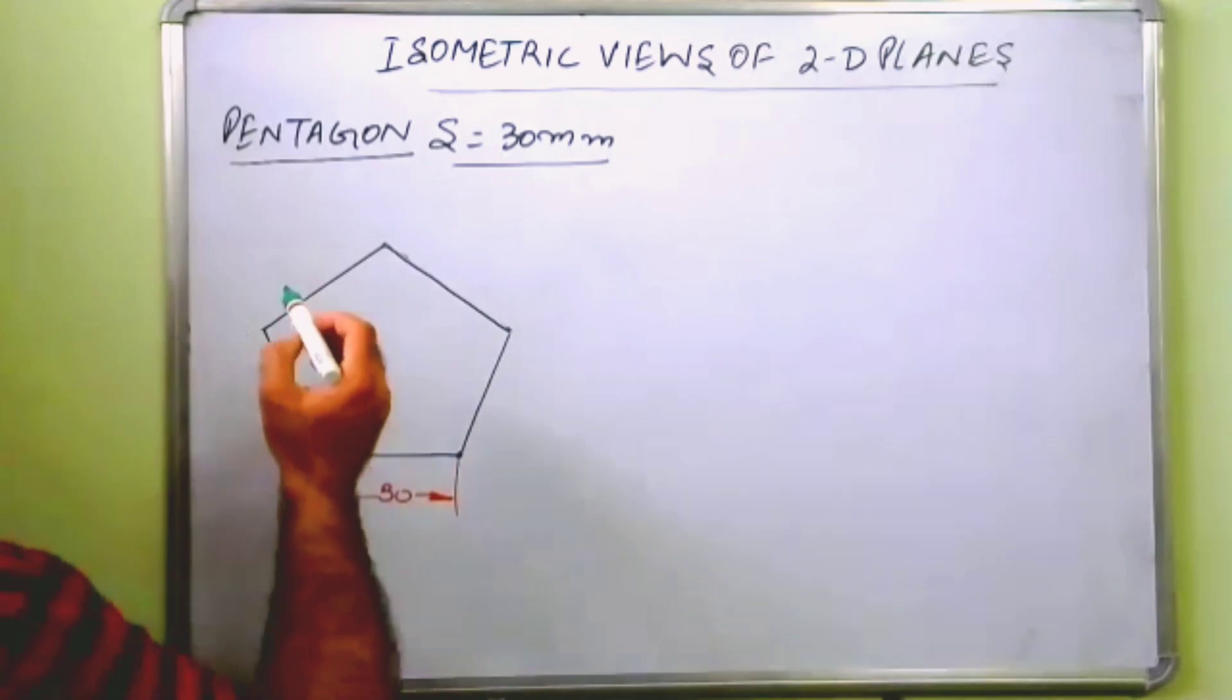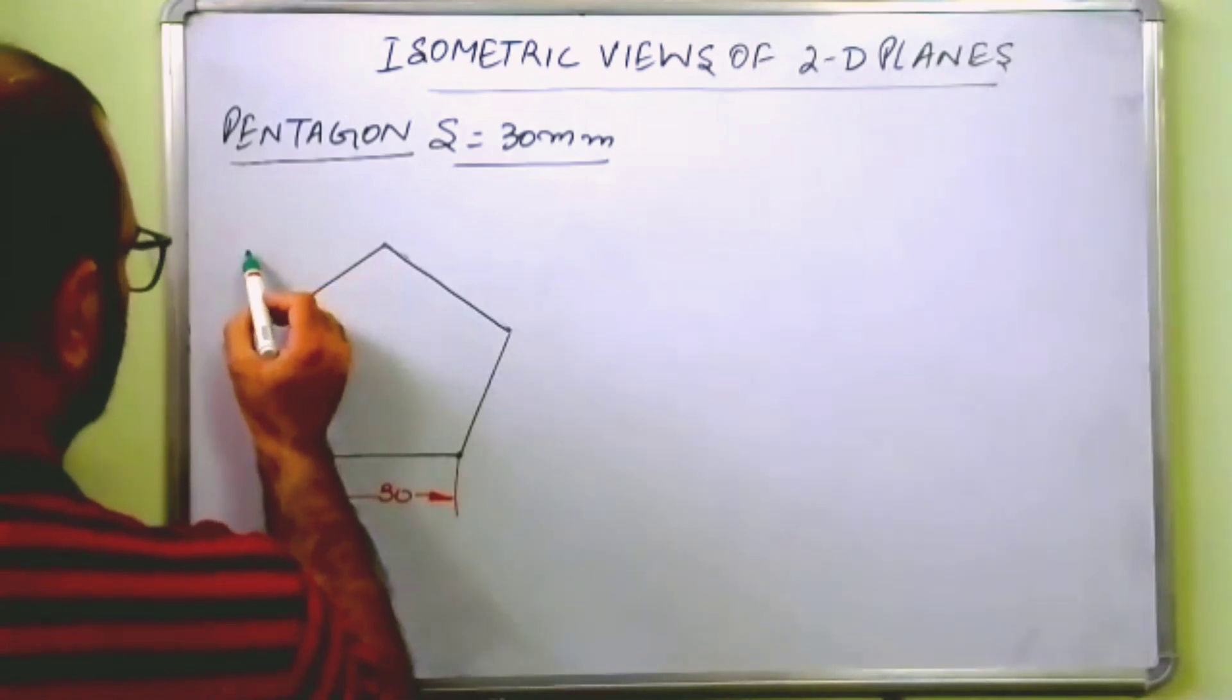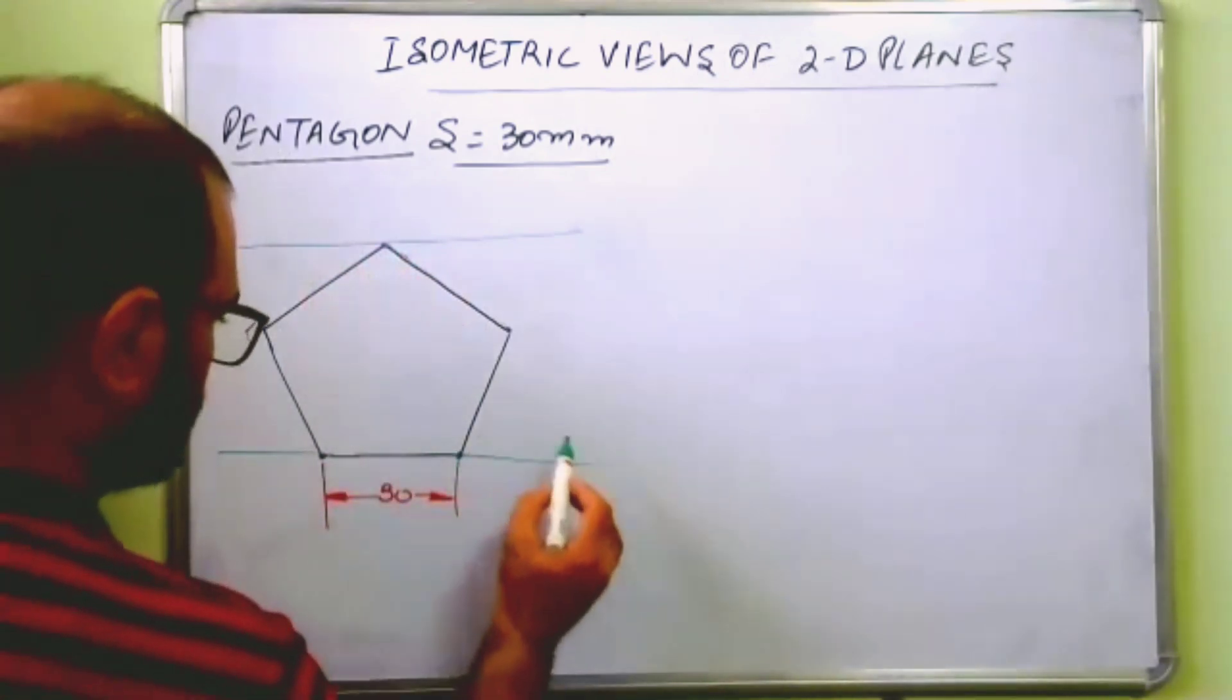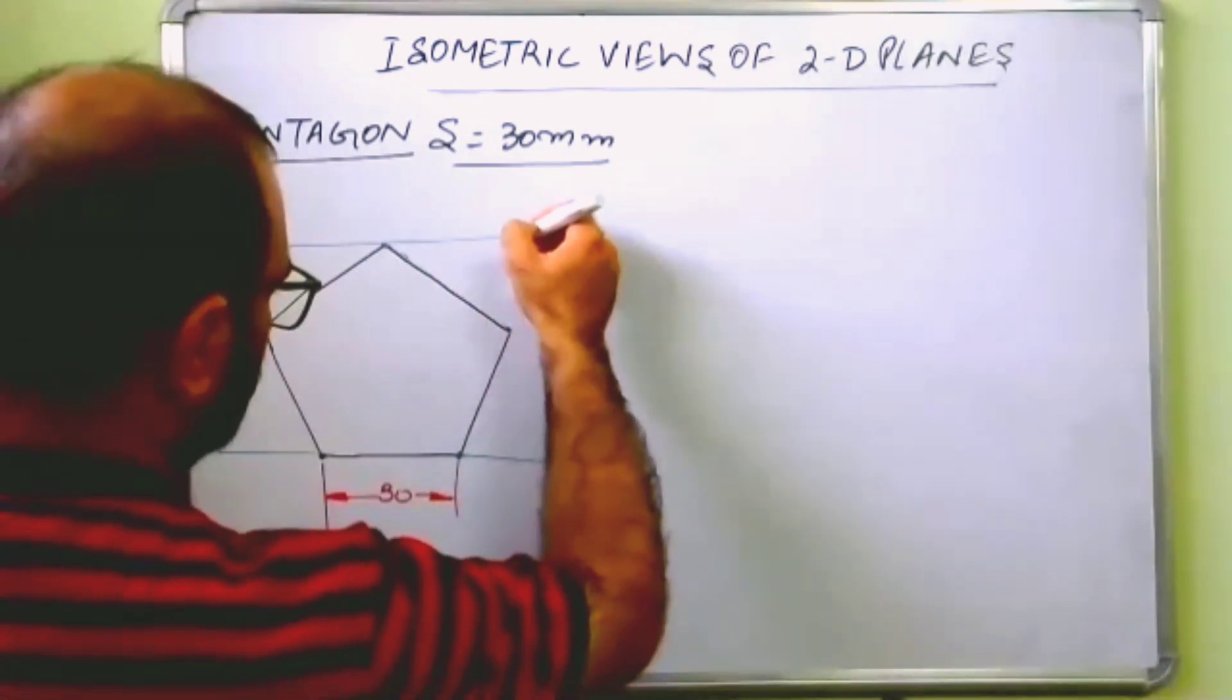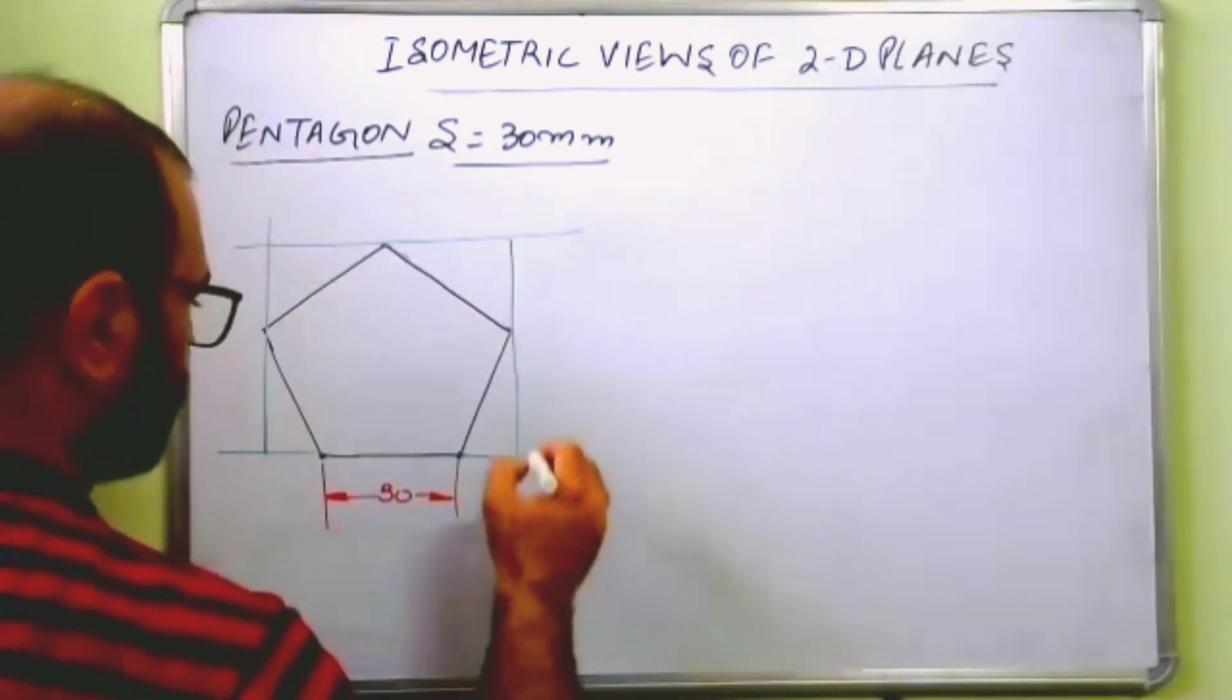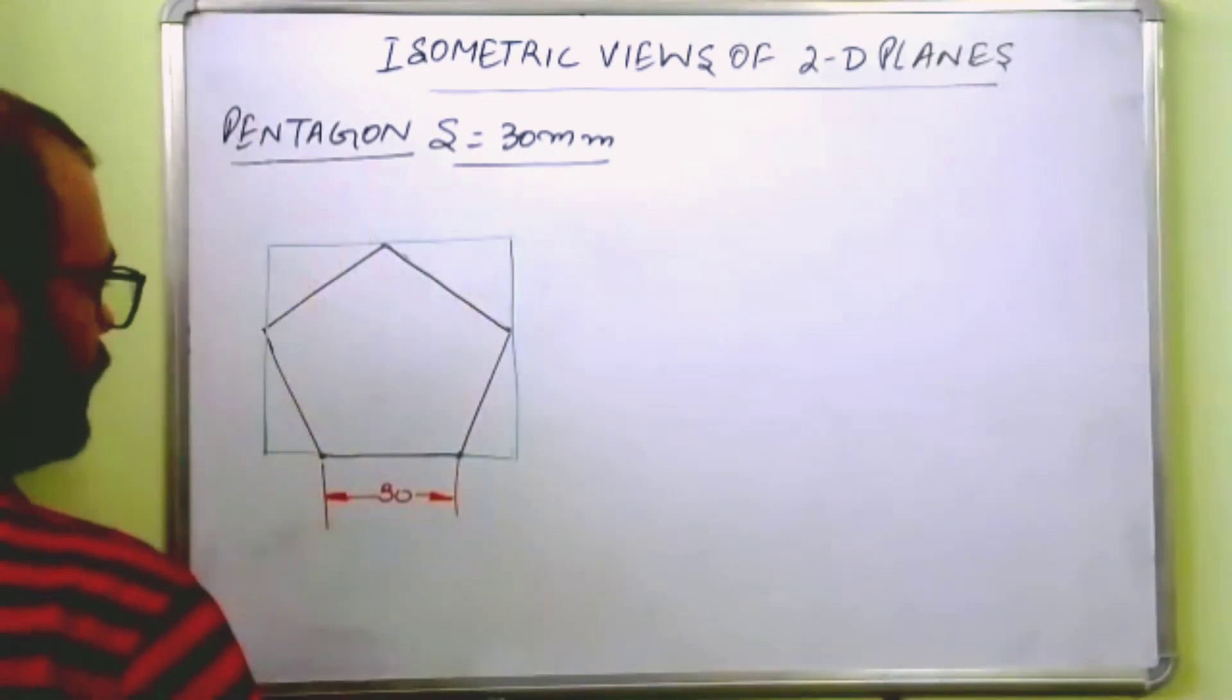Then you enclose it in a box. Let us enclose it in a box. So you draw two horizontal lines on the two vertical points, then two vertical lines horizontally. Like this, then you do it like this.